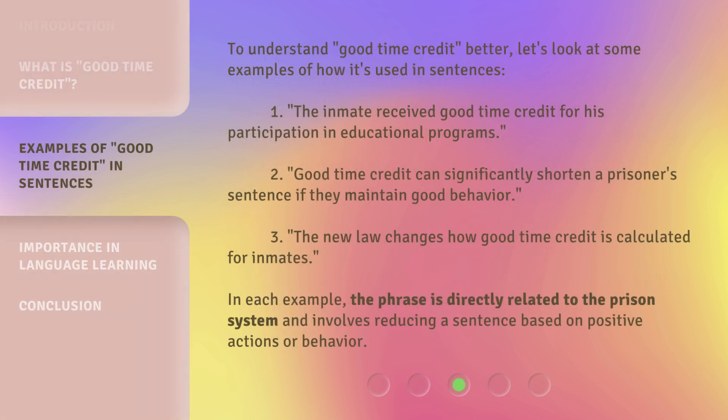To understand good time credit better, let's look at some examples of how it's used in sentences. First, the inmate received good time credit for his participation in educational programs. Second, good time credit can significantly shorten a prisoner's sentence if they maintain good behavior. Third, the new law changes how good time credit is calculated for inmates. In each example, the phrase is directly related to the prison system and involves reducing a sentence based on positive actions or behavior.